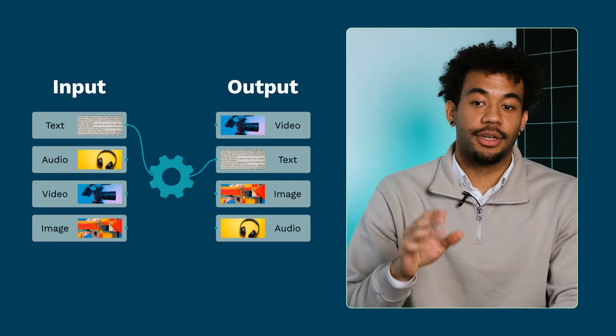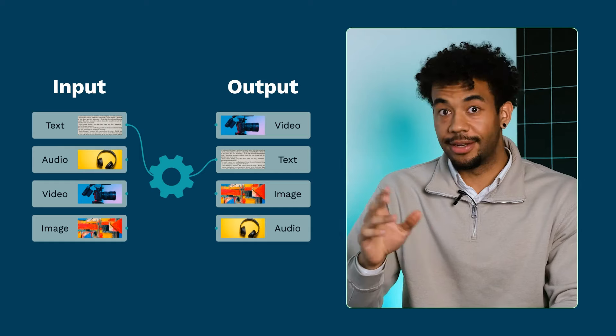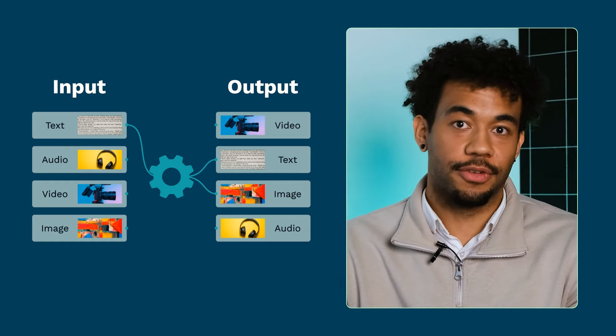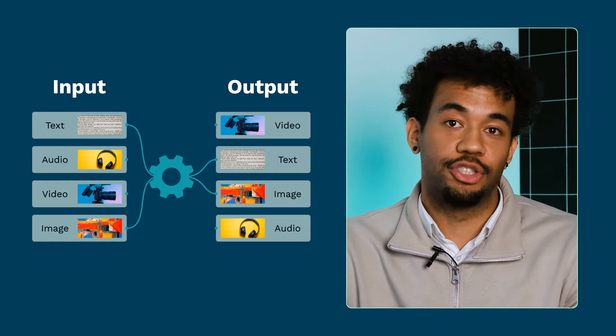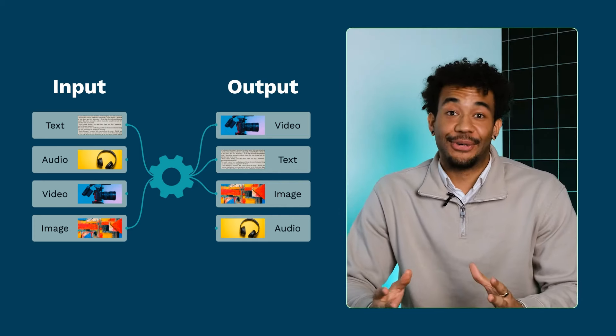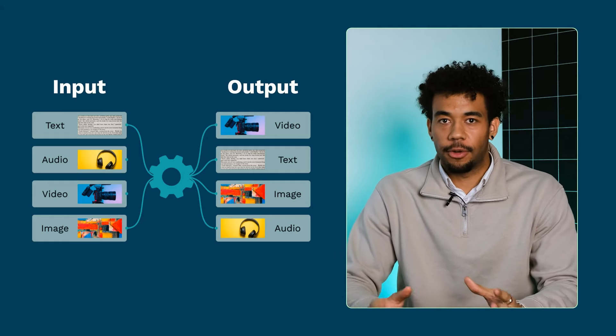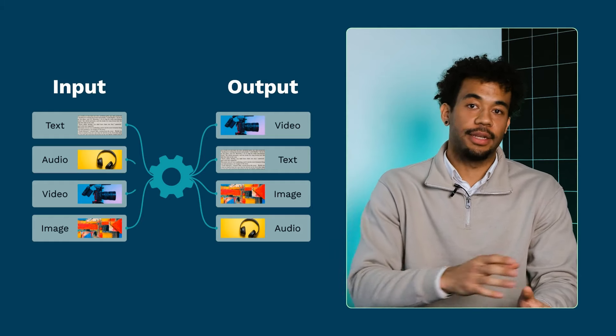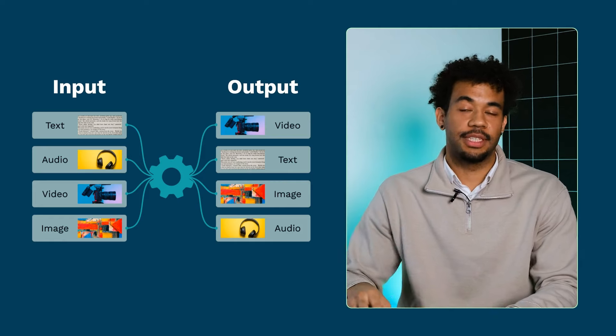But we can also give a text-based prompt to generate an image, or use a few images as input to generate a short video sequence. There are really many different types of outputs that can be generated from many different types of inputs, sometimes even within the same application.